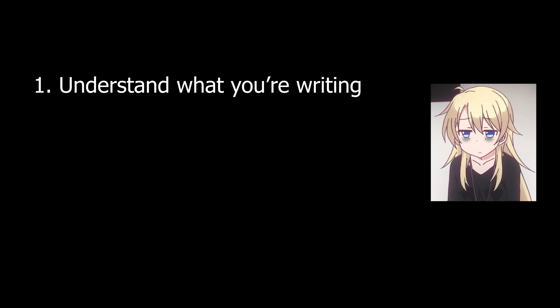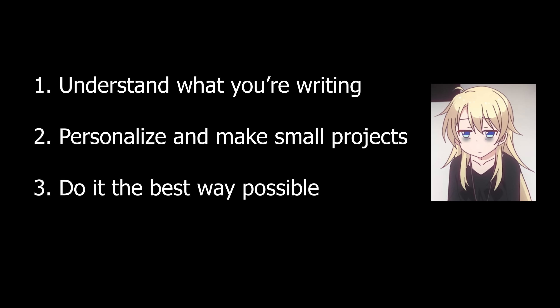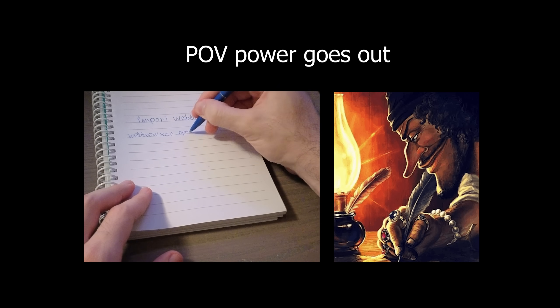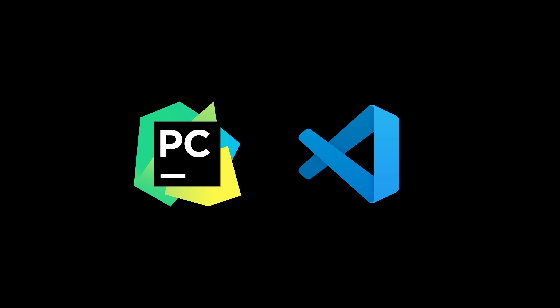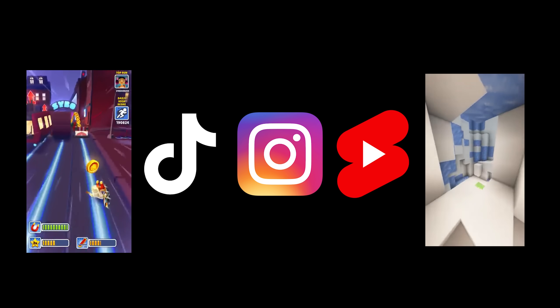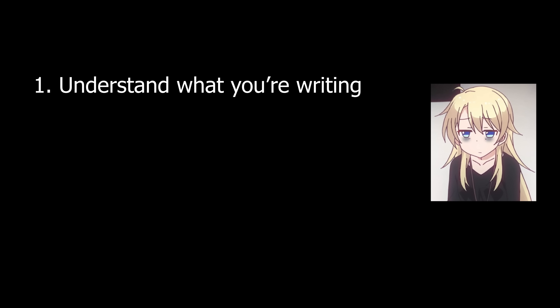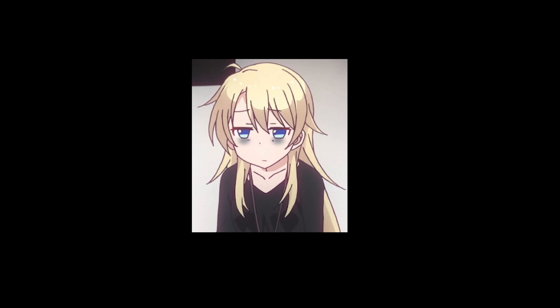First, experiment with the code and understand what you're actually writing. Second, make your own small projects that you actually enjoy working on. Third, make sure that the way you're doing it is the best way before you move forward. You'll need something to write your code in — I'd recommend VS Code. I'll show you how to follow the first rule during this video.